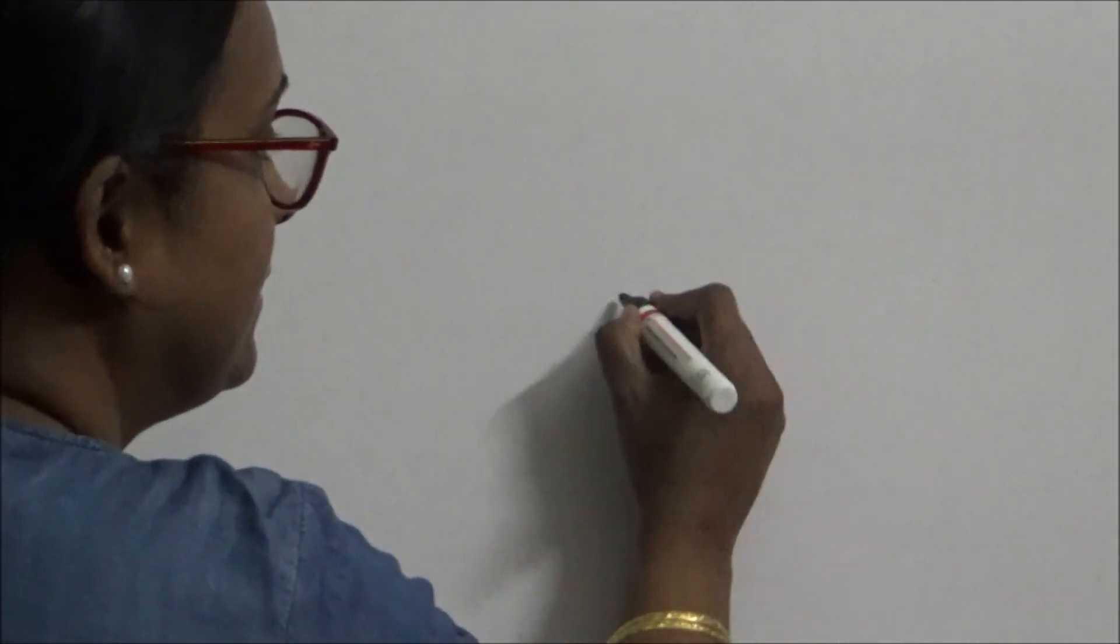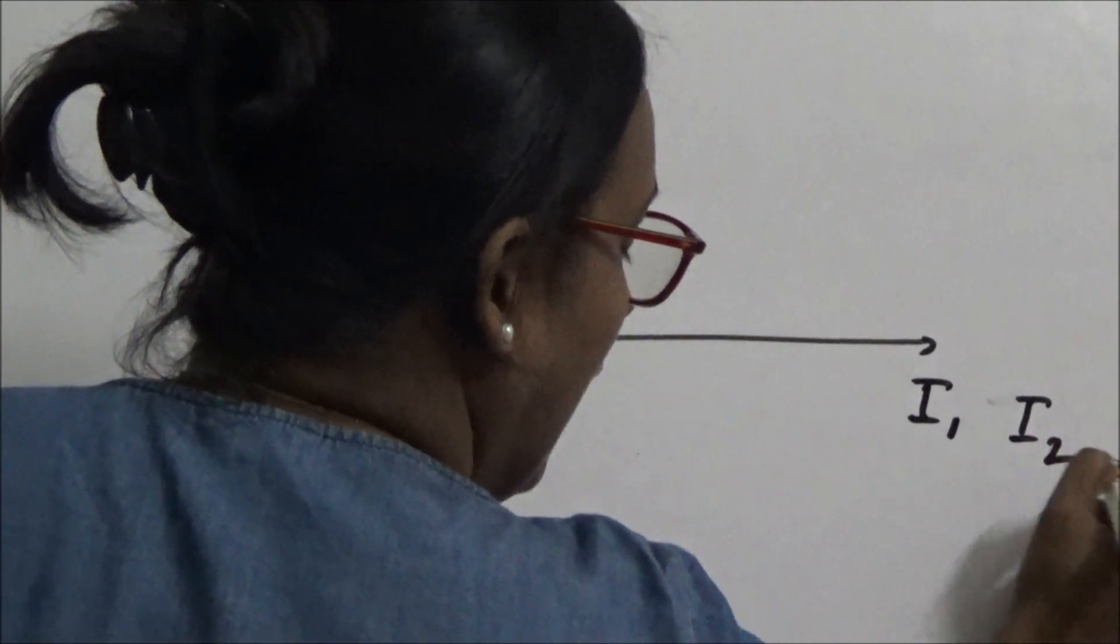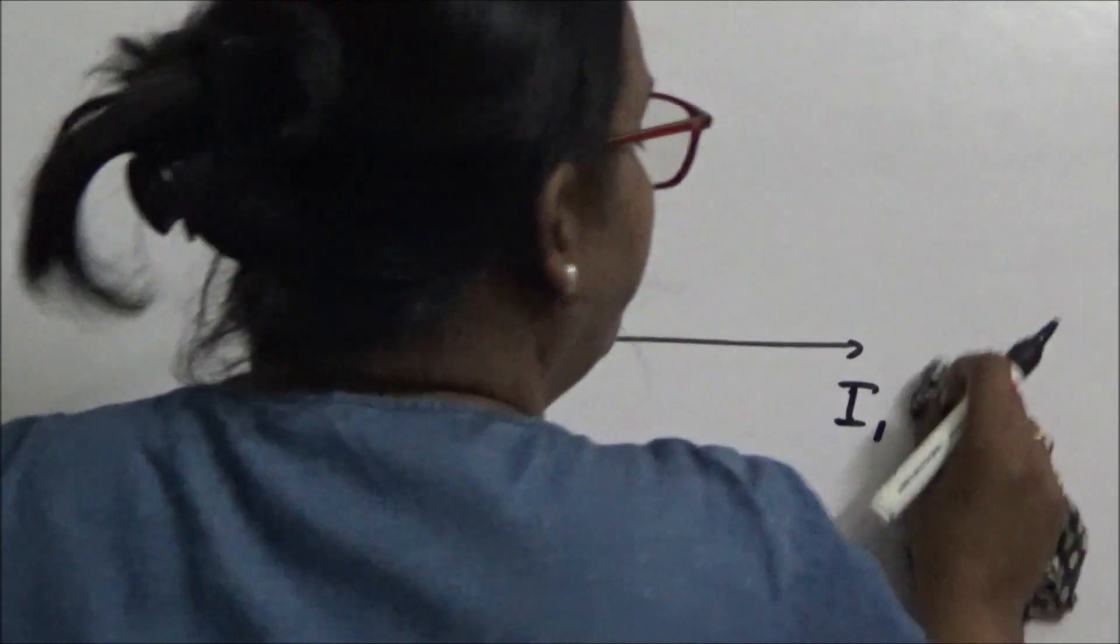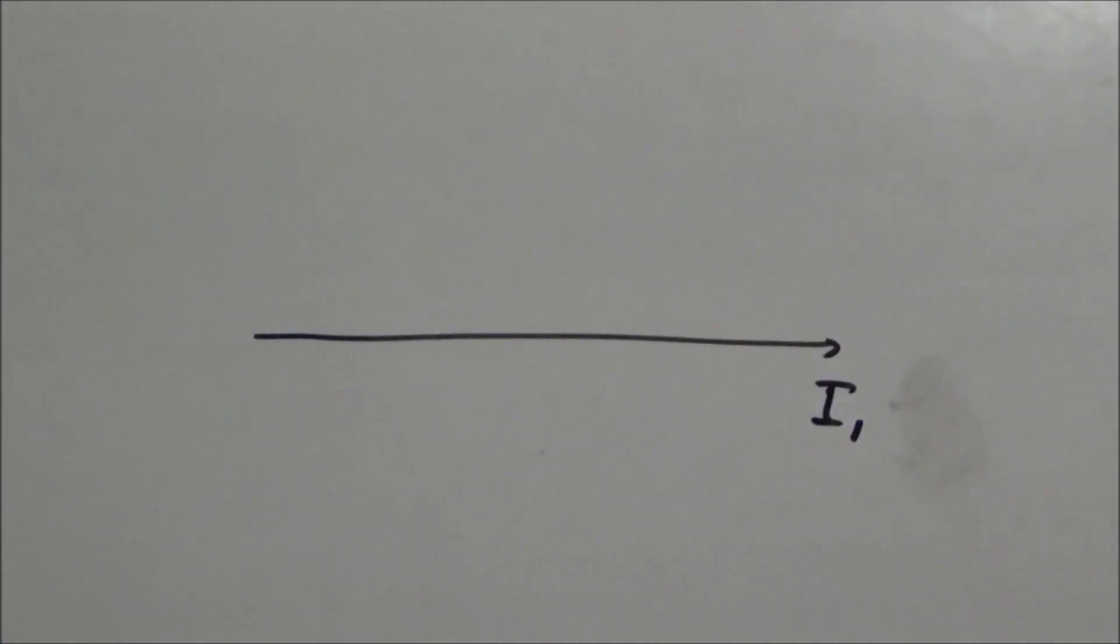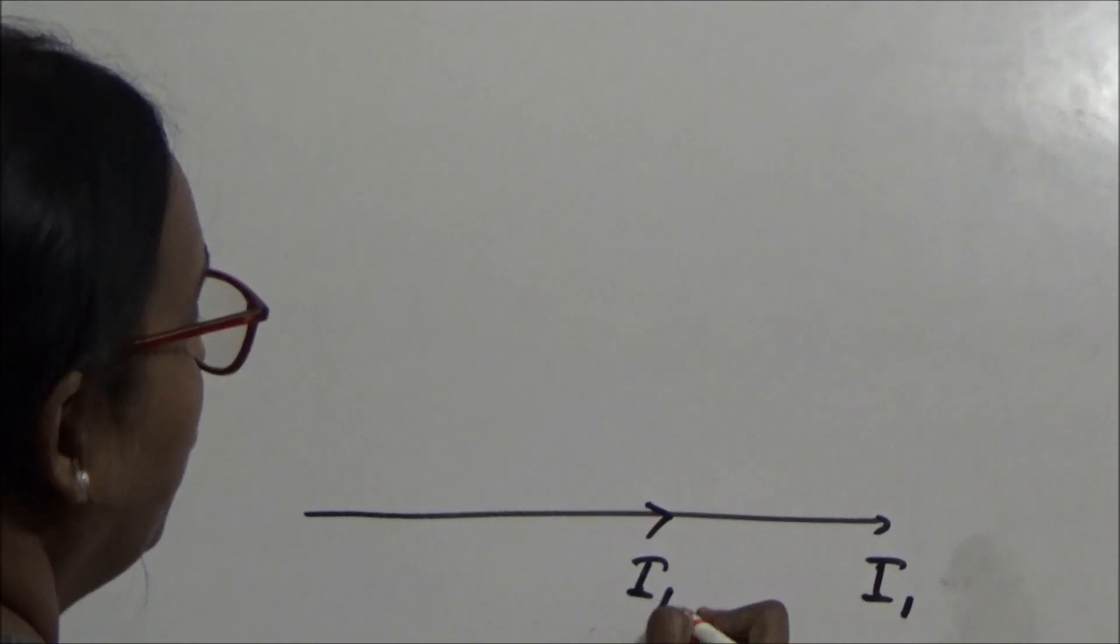Now I am drawing the phasor diagram. The first line is the current I1. The inductive drop and resistive drop. So this is I1.